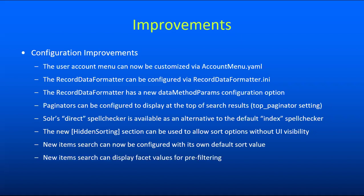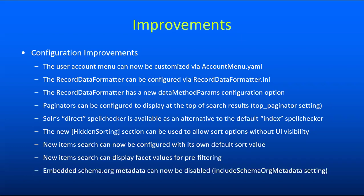Additionally, we've added the ability to pre-filter new items with facet values which can be configured. And finally, the functionality that embeds schema.org metadata in the markup of record pages can now be turned off if you don't want it. Some situations have been identified where this metadata is actually unhelpful for search engine optimization purposes, so if you want to get rid of it, you can just turn it off with the include_schema_org_metadata setting.